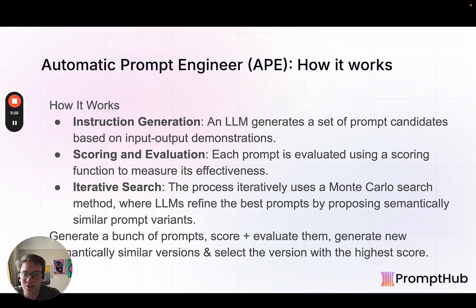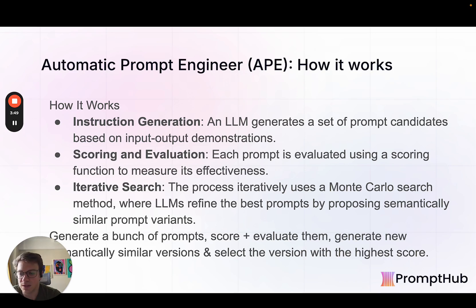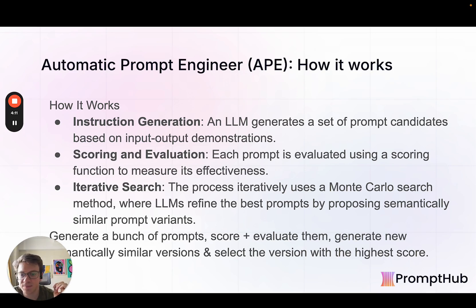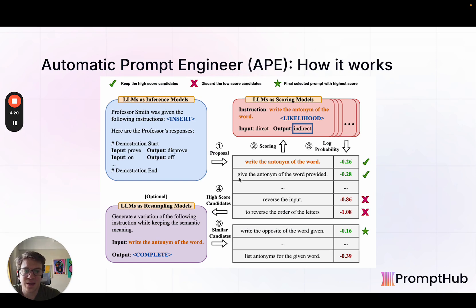Next, and maybe the most popular — partly because of the branding — is Automatic Prompt Engineer, which is also one of the older methods and one of the first metaprompting approaches using LLMs to write prompts. Similar to the last one, an LLM generates a bunch of prompt candidates based on some demonstrations you share initially. Each prompt is then evaluated using some sort of scoring function — a quantitative measurement of the outputs. Then a search method is used to refine the best prompts by looking at the best outputs and generating semantically similar variants, to see if that semantic change could lead to higher-scoring outputs. So: generate a bunch of prompts, score and evaluate them, generate semantically similar versions, and pick the version with the highest score once you reach a stopping point. We have prompt templates for this in the blog post below.